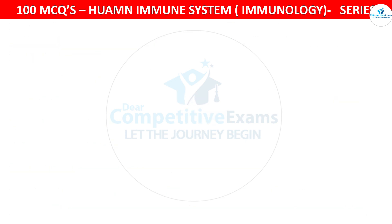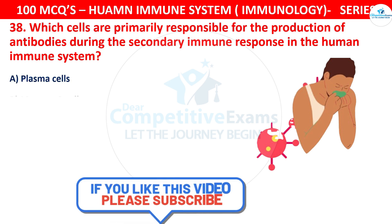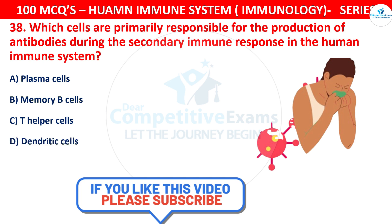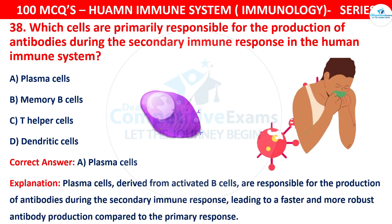Question 38: Which cells are primarily responsible for the production of antibodies during the secondary immune response in the human immune system? The options are Plasma cells, Memory B cells, T helper cells, or Dendritic cells. The correct answer is A, that is Plasma cells. Plasma cells derived from activated B cells are responsible for antibody production during the secondary immune response, leading to faster and more robust antibody production compared to the primary response.